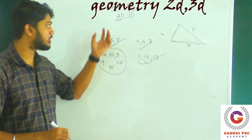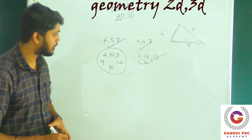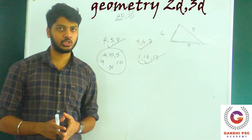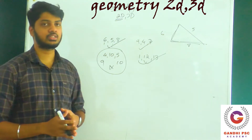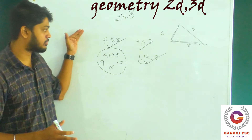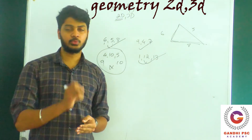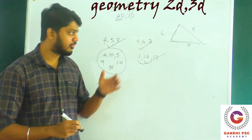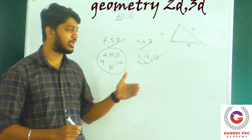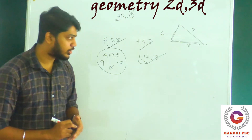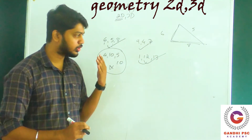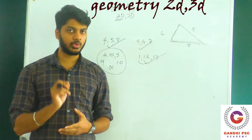They are finding 2D shapes in geometry. The triangle types are: right triangle, obtuse triangle, acute triangle, equilateral triangle, isosceles triangle, and scalene triangle.